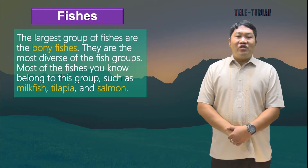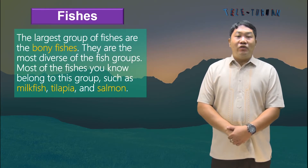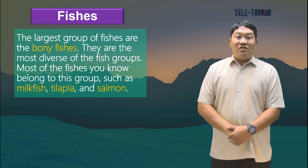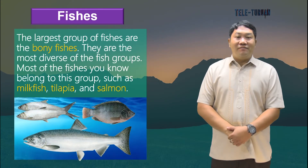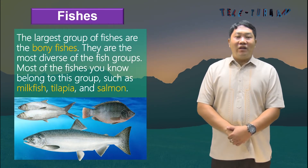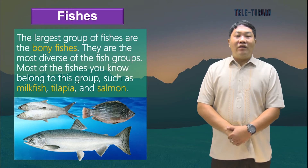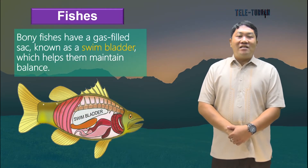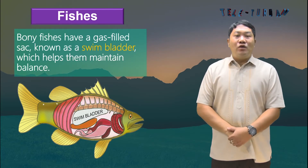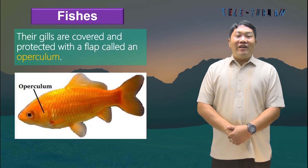The largest group of fishes are the bony fishes. They are the most diverse of the fish groups. Most of the fishes you know belong to this group, such as milkfish, tilapia, and salmon. Bony fish live in almost every aquatic environment — saltwater and freshwater. They have a gas-filled sac known as a swim bladder, which helps them maintain balance. Their gills are covered and protected with a flap called an operculum.